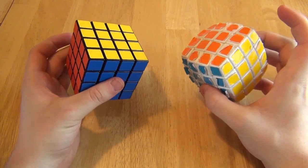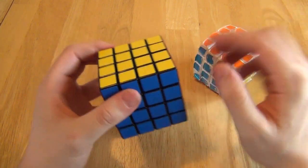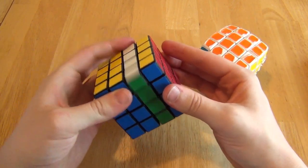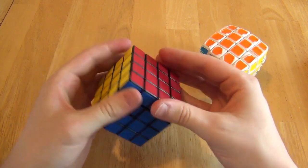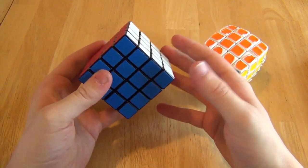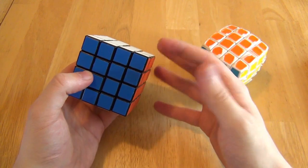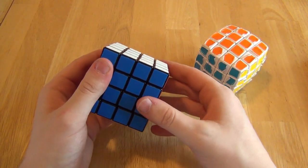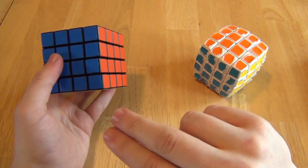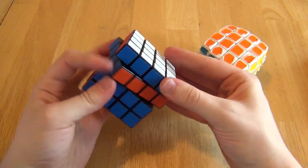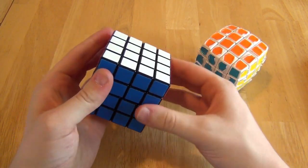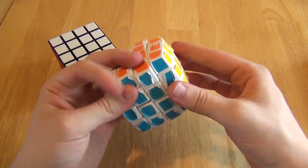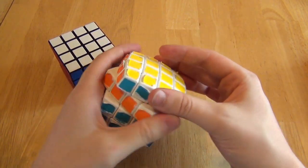Now one advantage I found over these cubes, over the Shang Shao, is their inner layer slices. They are very smooth. Now unfortunately, I don't have the Shang Shao with me anymore to compare it, but the Shang Shao had trouble catching on the inner core alignment mechanism. You remember that there were bumps sticking out of the core, and those would get caught. But these seem to be very smooth on the V-Cube 4, especially on the pillowed version.